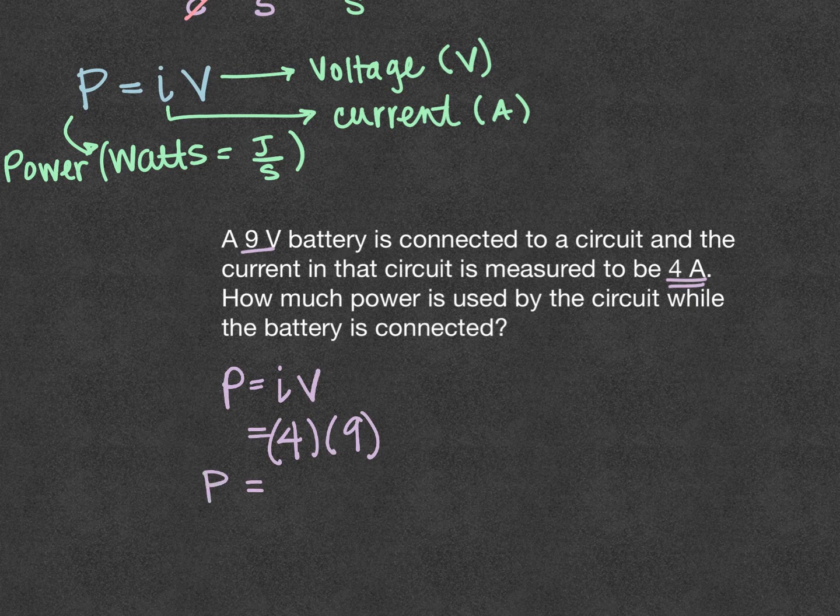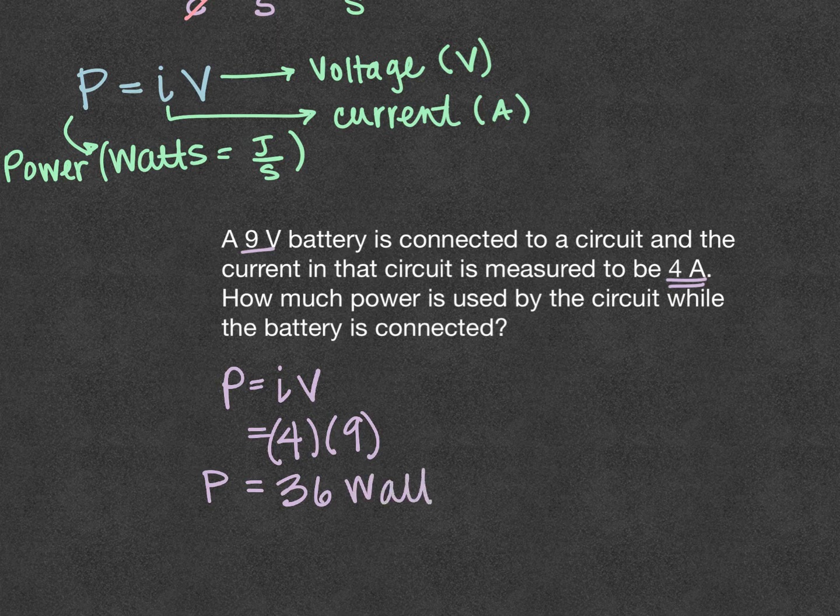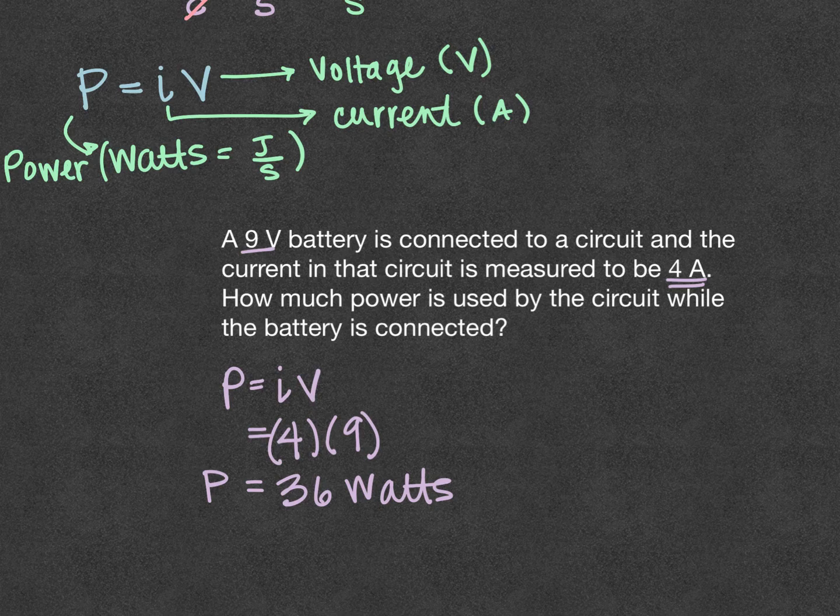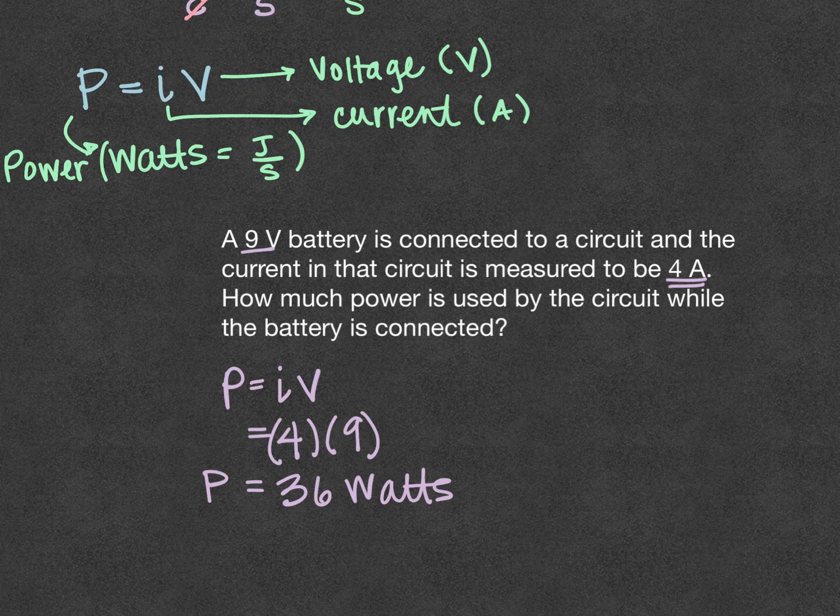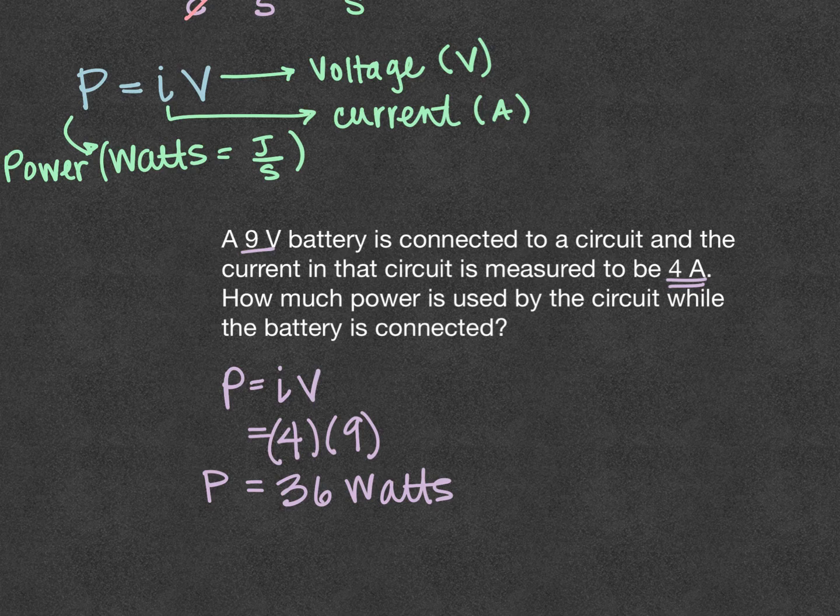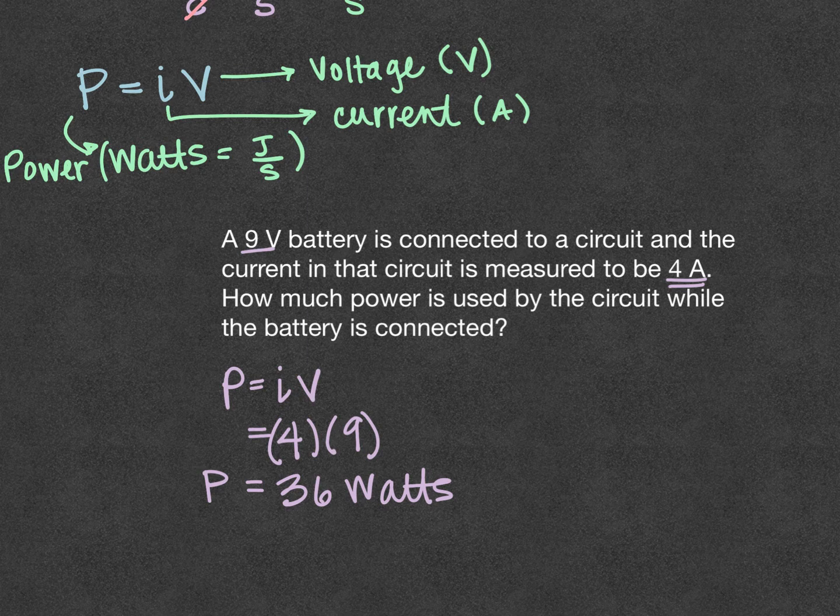So our power would be 36 watts. Now since the power is a measure of energy per time, that's why LEDs are considered to be such a power saver or an energy efficient way to light a room or your phone or television.